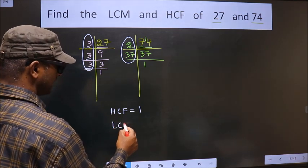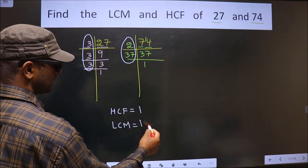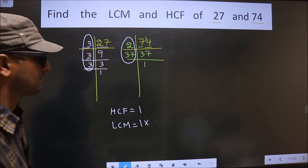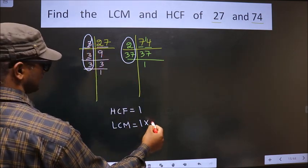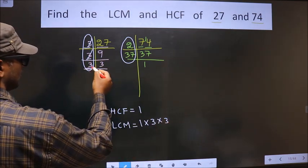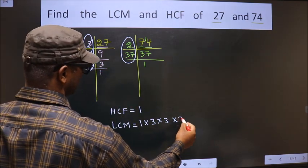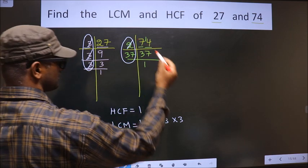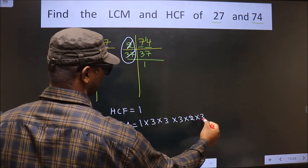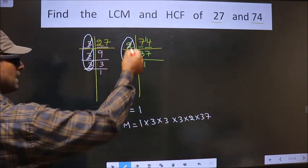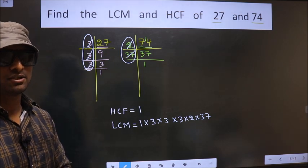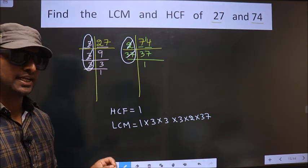Now to get the LCM, we multiply the HCF by certain numbers. How do we decide those numbers? Here 3 is not cut, so you cut 3 right here. This 3 also not cut, cut it. This 3 also not cut, cut it. 2 is not cut, cut 2. 37 is not cut, cut 37. Now each number has been cut. You multiply all these numbers to get the LCM.